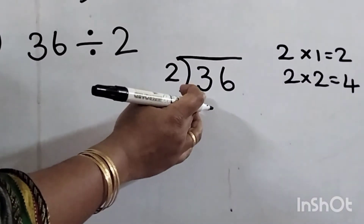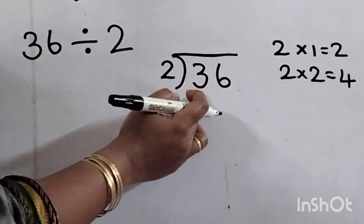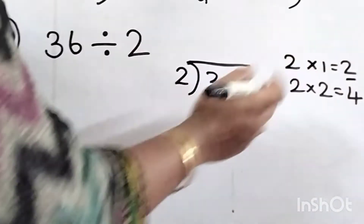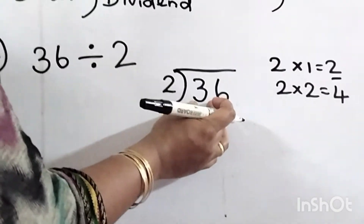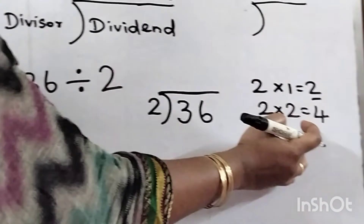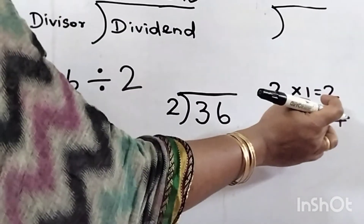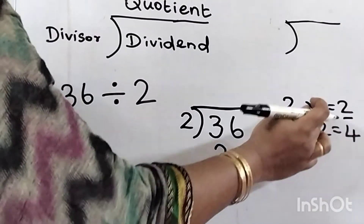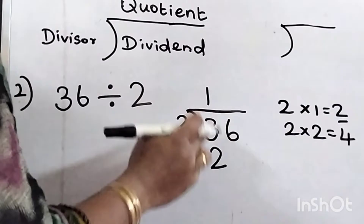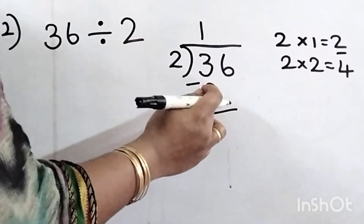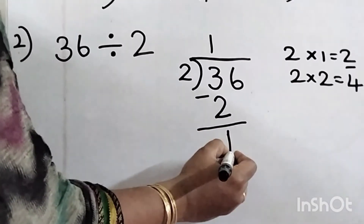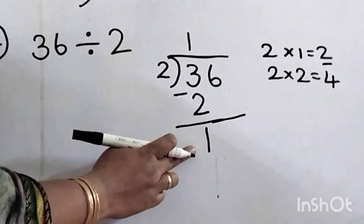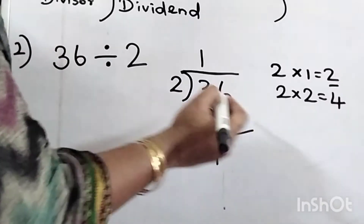The number which is less than 3 in the 2 times table is 2. So write 1 at the top, because 2 times 1 is 2 — the nearest lesser number to 3. Now subtract: 3 minus 2 is 1. The remainder 1 is less than the divisor 2, so we can't divide. Take the next digit, 6. Now it is 16.